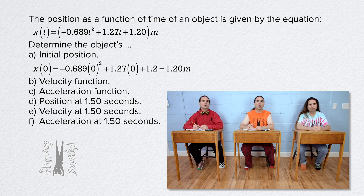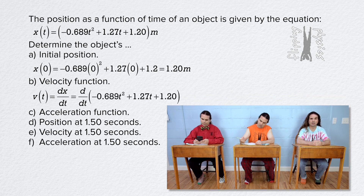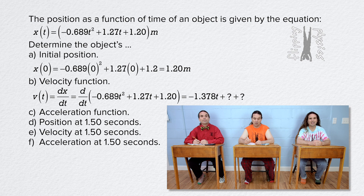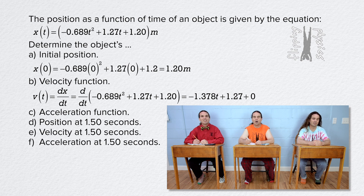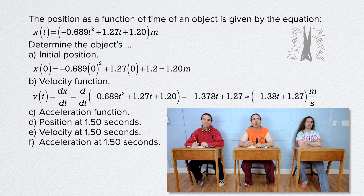Bo, please do part B. Part B is where we determine the velocity function. We determined last time that the derivative of position with respect to time equals velocity, so let's take the derivative of the position function with respect to time. That equals 2 times negative 0.689, or negative 1.378, times time to the first power, plus 1.27 — because the derivative of the constant 1.20 meters is 0. So the velocity function with correct sig figs and units equals negative 1.38 times time plus 1.27 meters per second. Correct, Bo.